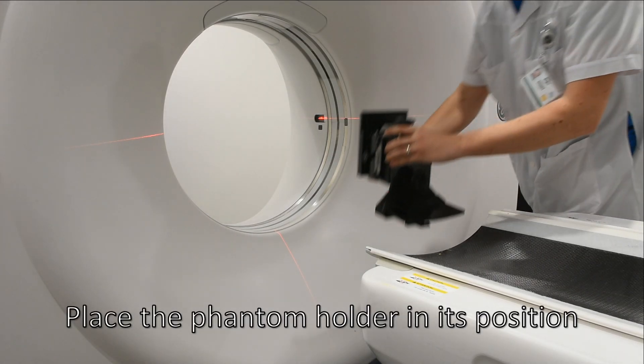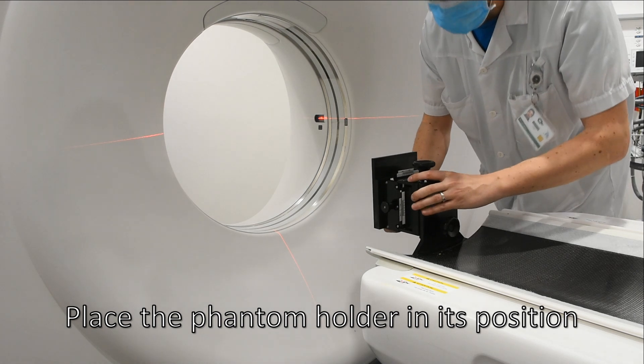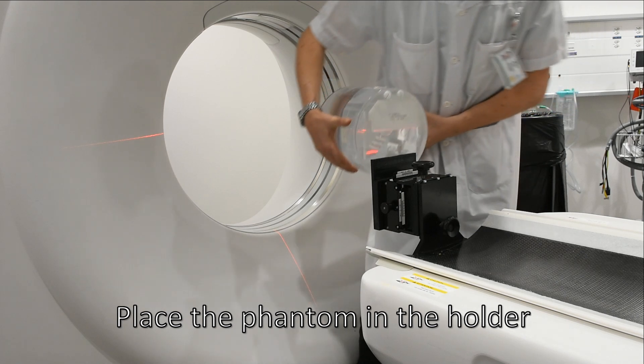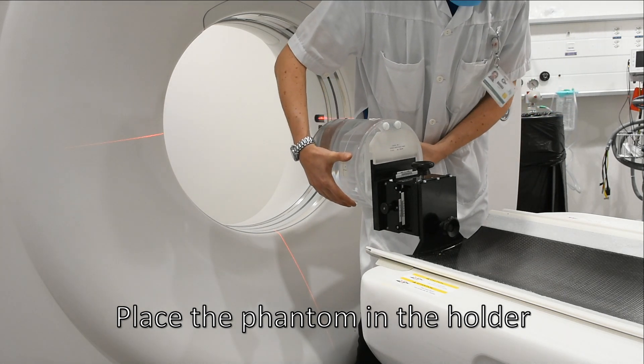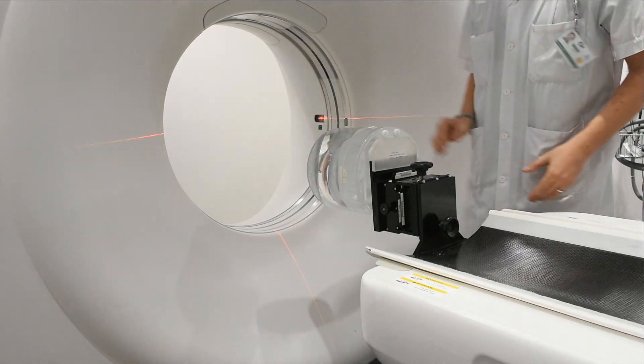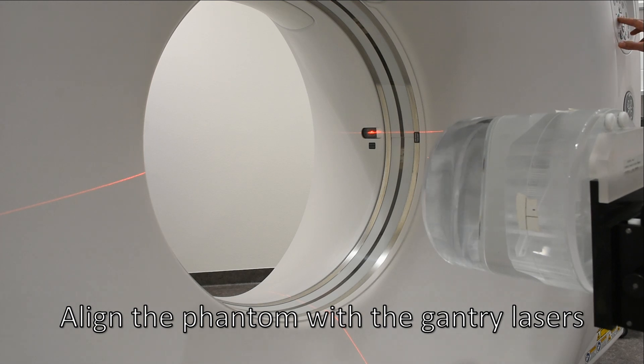Place the phantom holder in its position. Place the phantom in the holder. Align the phantom with the gantry lasers.